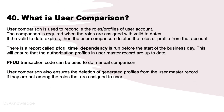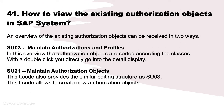What is user comparison? User comparison is used to reconcile the roles or profiles of a user account. The comparison is required when roles are assigned with valid-to dates. If the valid-to date expires, user comparison deletes the roles or profiles from that account. There is a report called PFCG_TIME_DEPENDENCY which runs before the start of the business day to ensure that authorization profiles and user master records are up to date. The PFUD transaction code can be used for manual comparison.